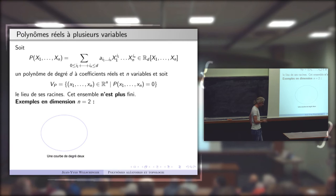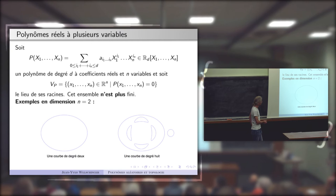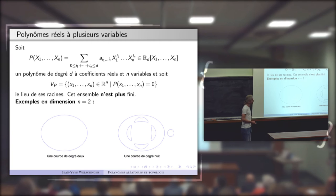Si on augmente le degré, on peut avoir des courbes beaucoup plus compliquées. Par exemple, une courbe de degré 8 peut avoir 6 composantes connexes — et on aurait pu faire encore plus compliqué en degré 8. Si le degré augmente, on a de plus en plus de composantes connexes.